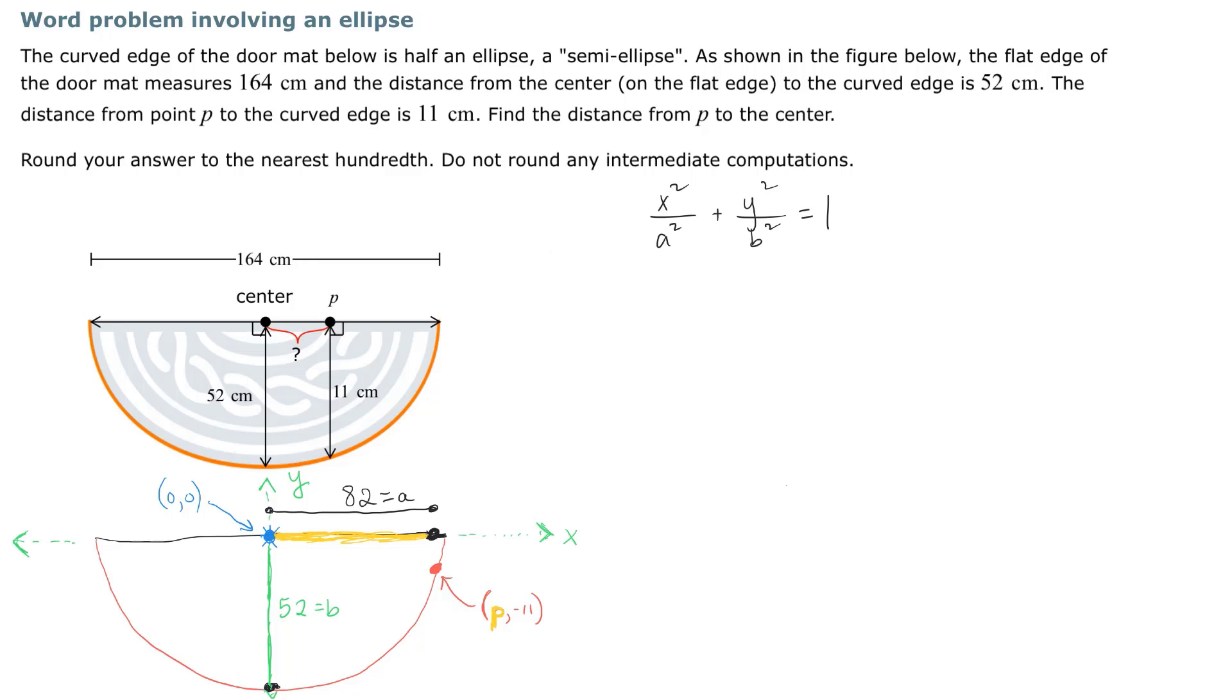We're going to take this point right here. And we're going to substitute it in there. What do you mean substitute in there? Well, we're going to have P² over a². Plus, what's y? Well, y is negative 11. And what are we going to do with that negative 11? We are going to square it. Put it over b² is equal to 1.